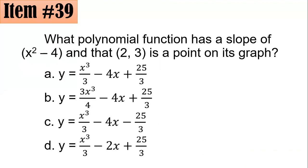Item 39: What polynomial function has a slope of x squared minus 4 and has the point (2, 3) on its graph? Did you go for a, b, c, or d?